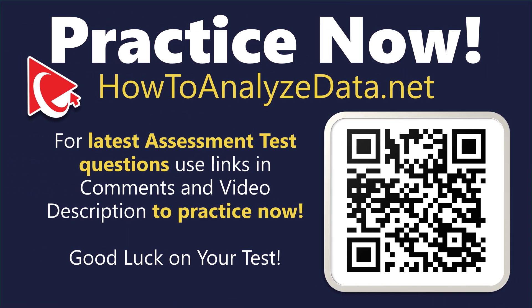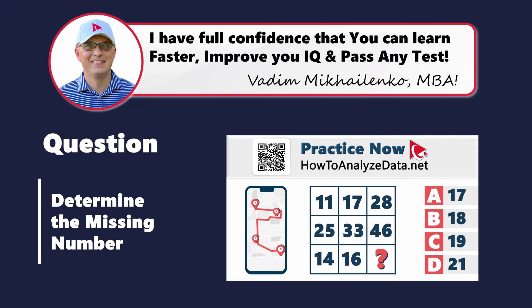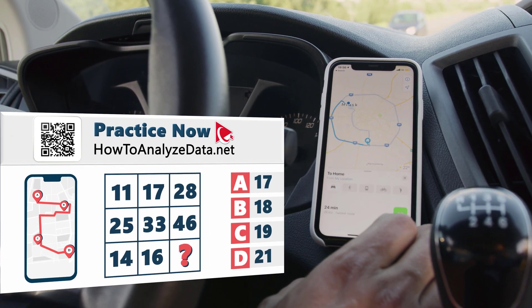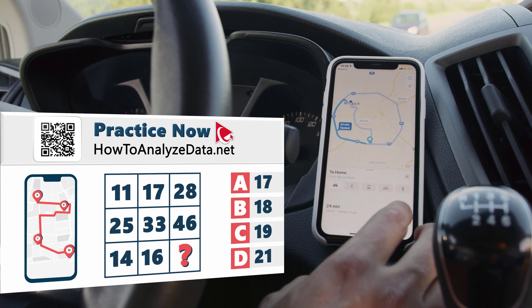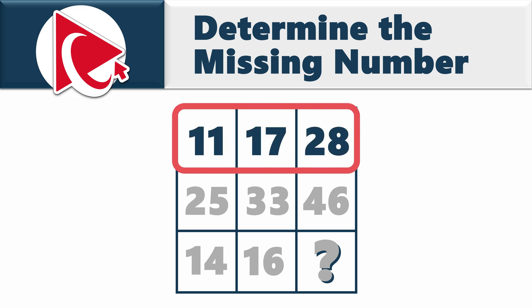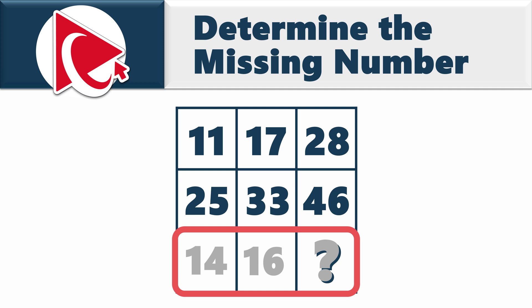You know, I tried this question, and this particular one is like following a GPS which constantly says recalculating. So I'm taking a passenger seat and delegating the full responsibility of solving this particular one to you. You're presented with a 3 by 3 matrix. The numbers in the first row are 11, 17, and 28. In the second row, the numbers are 25, 33, and 46. And in the third row, the numbers are 14, 16, and then comes the missing number.